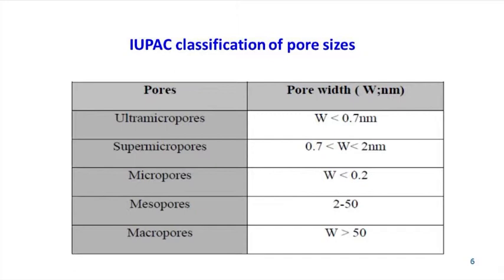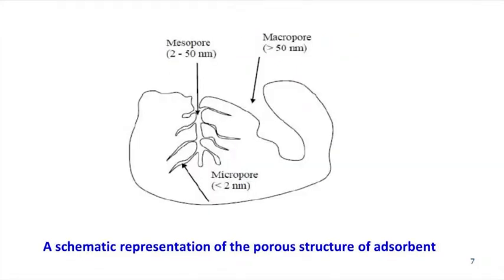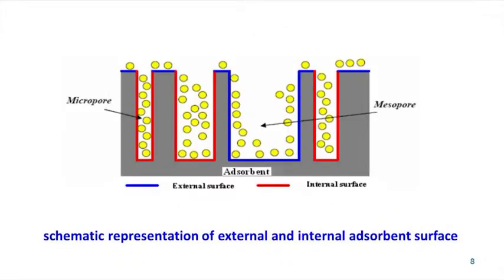The IUPAC classification of pores is shown in this table. Adsorbent surface area — a schematic representation of the external and internal adsorbent surface — is shown in the next figure. The specific surface area is another important property that determines adsorbent usage and its capacity. The total surface area of activated carbon, for example, ranges from 500 to 2000 meters squared per gram, which quantifies the adsorption sites for molecules to attach.